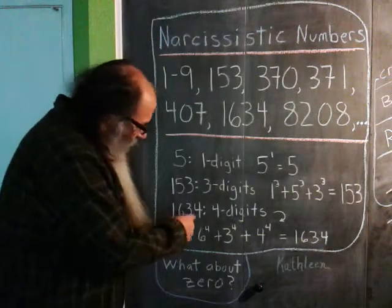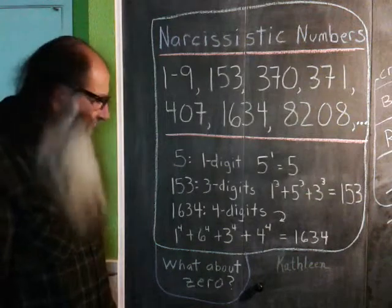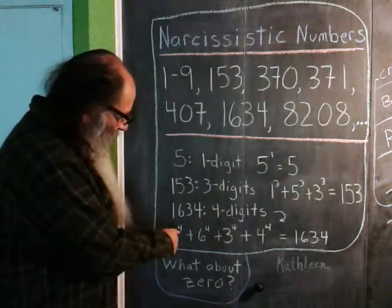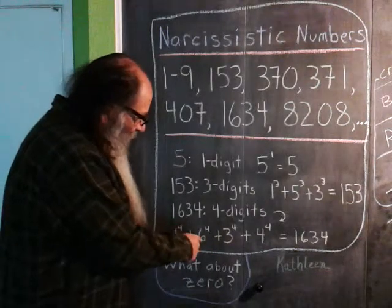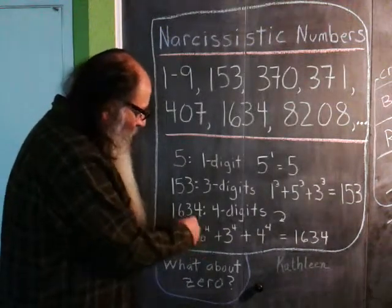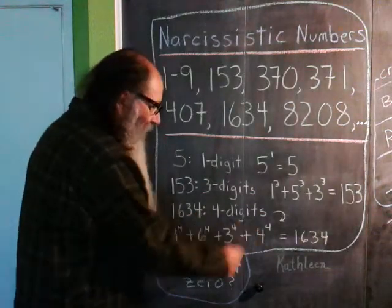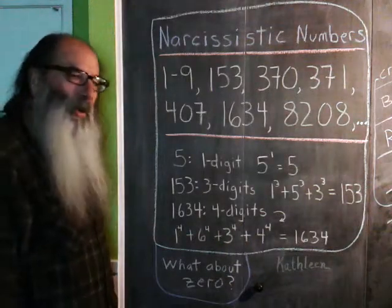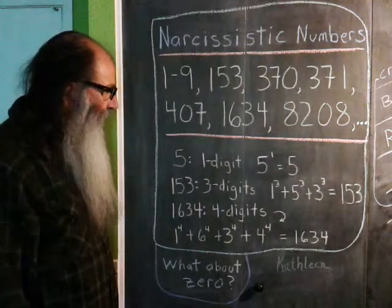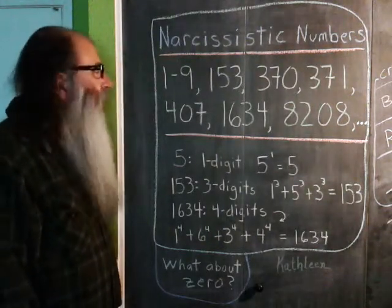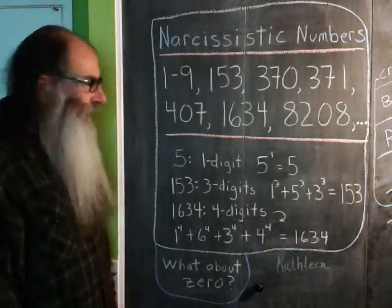And then if we take a look at a 4-digit number here, 1,634 consists of 4 digits. So if we take the first digit raised to the fourth power, add to that the digit 6 raised to the fourth power, add to that the digit 3 raised to the fourth power, if we go ahead and evaluate this expression, it evaluates to 1,634. So that's what makes Narcissistic numbers Narcissistic.